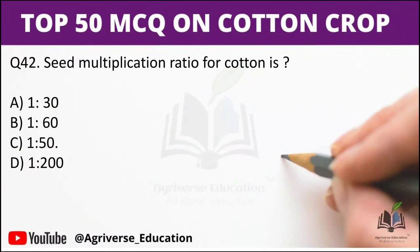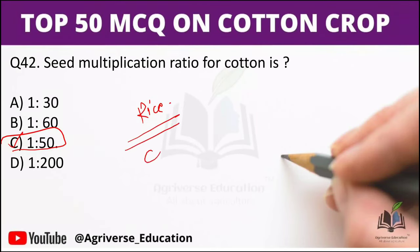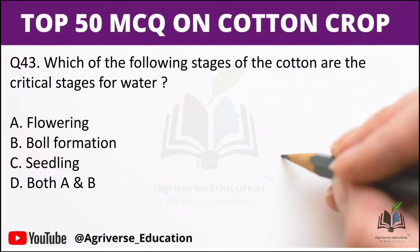Next question: Seed multiplication ratio for cotton is 1:50. This is an important question. For comparison, in rice and wheat, the seed multiplication ratio is different — the instructor notes this as an additional fact for students.